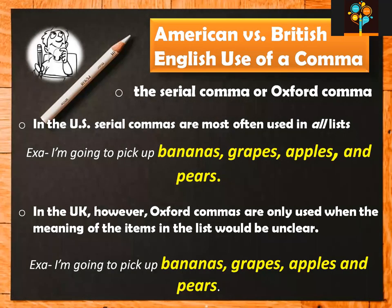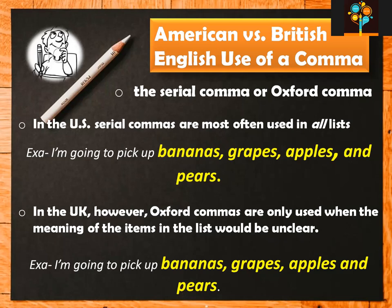Before going into the details, we must understand the difference between American and British English use of the comma. In this context, we can understand that the serial comma is also known as the Oxford comma. Why is it called the Oxford comma? Because it is traditionally used by Oxford University Press publishers and writers working in that category. The major difference between American and British English in the use of the comma is with the serial comma — the Oxford comma.